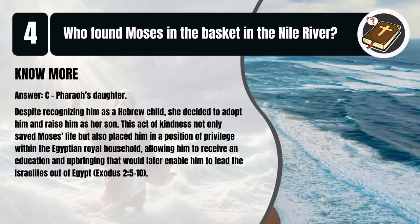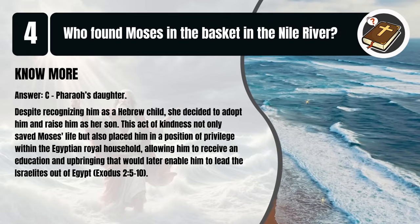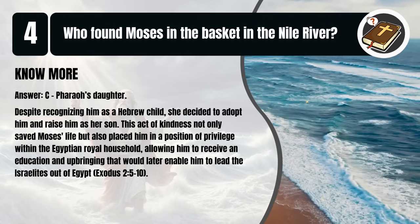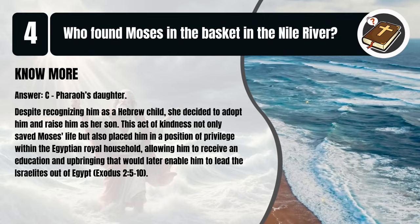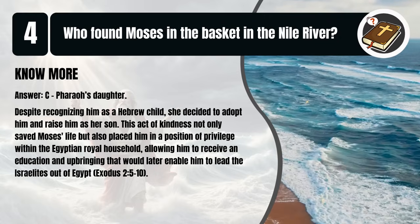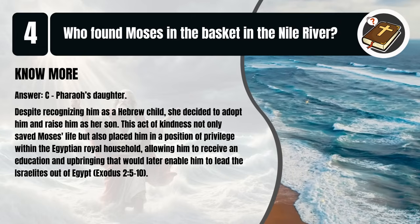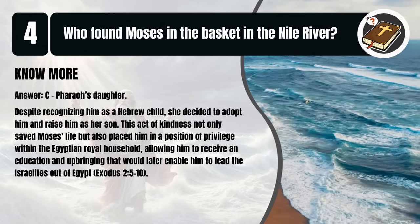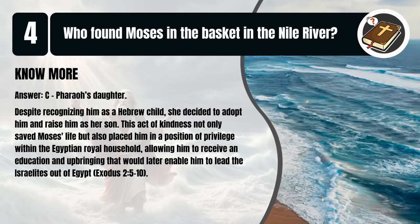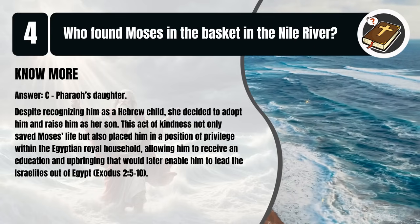That's C. Pharaoh's daughter. Despite recognizing him as a Hebrew child, she decided to adopt him and raise him as her son. This act of kindness not only saved Moses' life, but also placed him in a position of privilege within the Egyptian royal household, allowing him to receive an education and upbringing that would later enable him to lead the Israelites out of Egypt. Exodus 2:5-10.